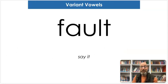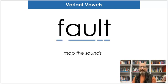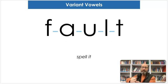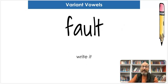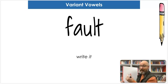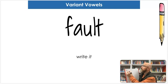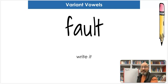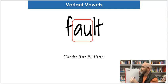Our first word is fault. Say fault. Map the sounds: F-A-U-L-T. Fault. Spell it: F-A-U-L-T. Fault. And let's write it — get your pencil and paper, whiteboard, marker, whatever you're using — F-A-U-L-T. Now we're looking for the "aw" sound. What letters make it in this word? A-U. That's right. Let's circle A-U in our word.